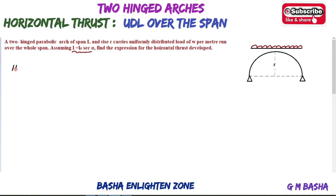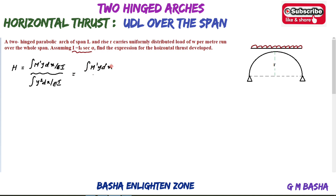The horizontal thrust formula is: H equals the integral of M-dash times y dx divided by the integral of y-squared dx. Since the cross-sectional area A is not given, it is taken as constant and cancels out. The given data: span L, rise R, and UDL of W per unit run.